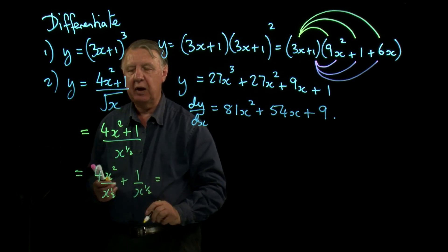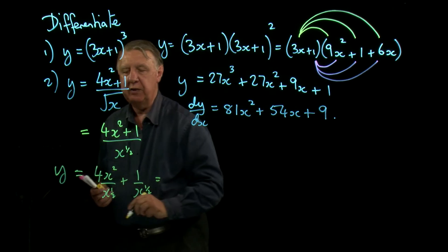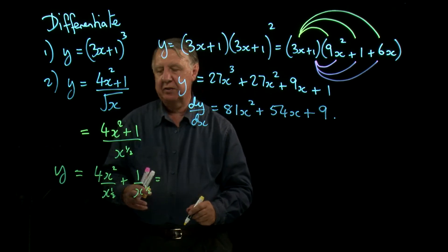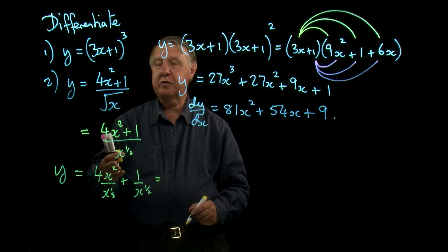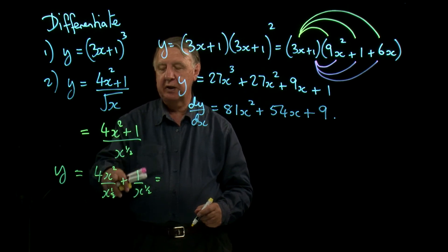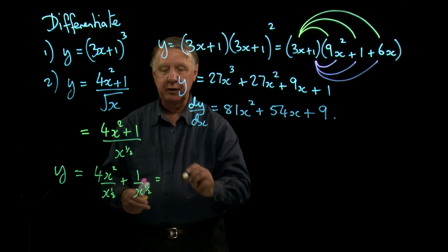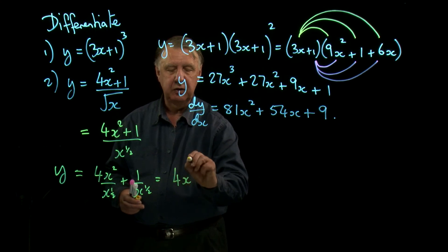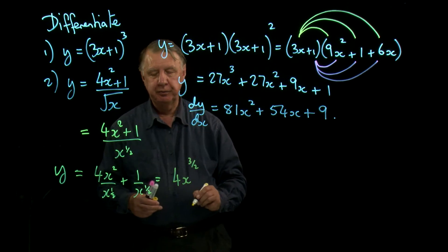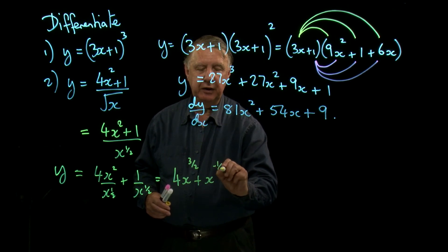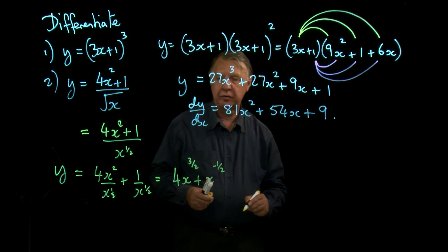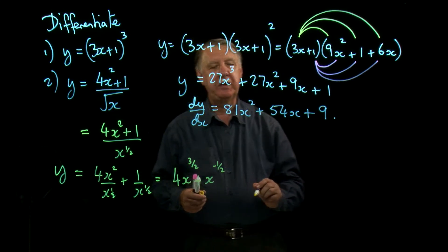So before you go anywhere, you can write it as a sum of powers of x. So x squared divided by x to the half, you subtract the indices. 2 take away a half is 1 and a half. So it's 4x to the 3 over 2. 1 over x to the half is x to the minus a half.